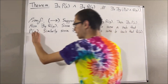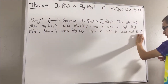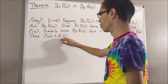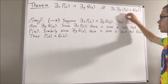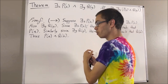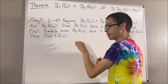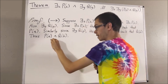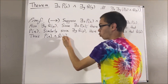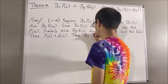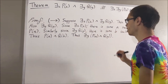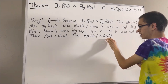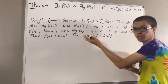Then we see that p of a and q of b is true. Now, since this is true, from here we can deduce that this is true. We can say that there exists at least one object y which satisfies p of a and q of y. There is at least one object which makes this statement turn out true — namely, if we take y to be b, it will be true.